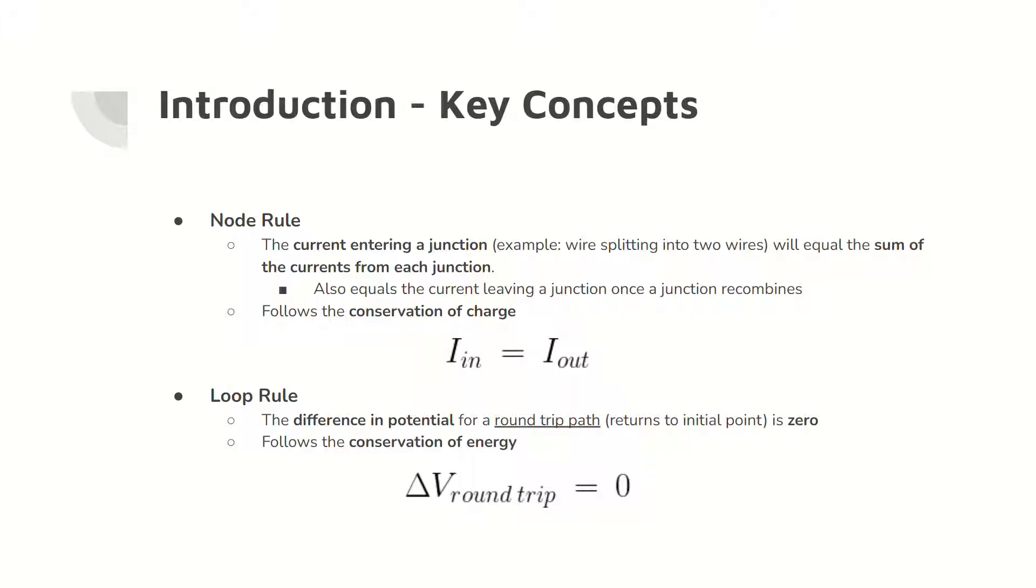The loop rule states that the difference in potential for a round-trip path around the circuit equals zero. Importantly, the loop rule can be used to calculate the current and the potential difference at different areas of a circuit.